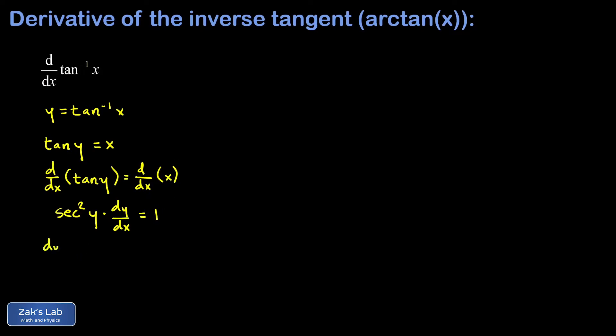Now we can solve for dy/dx and I get 1 over secant squared y. Now what we're hoping for is to get a formula for this derivative entirely in terms of x, so we need to substitute back our definition of y. That was the inverse tangent of x, so I get dy/dx, the derivative we're looking for, is 1 over secant squared of the inverse tangent of x.